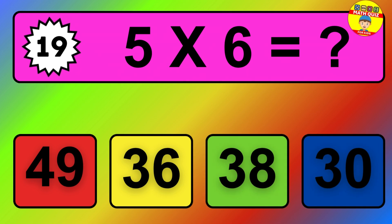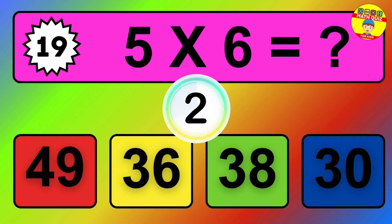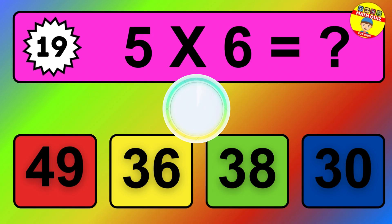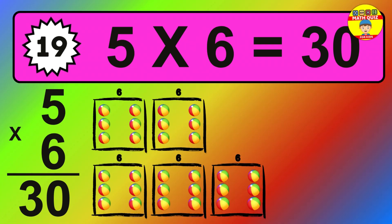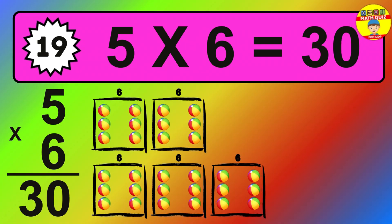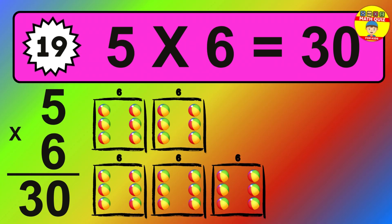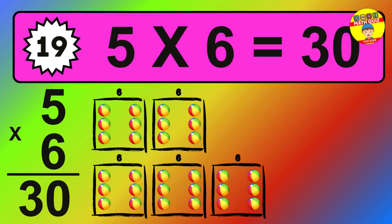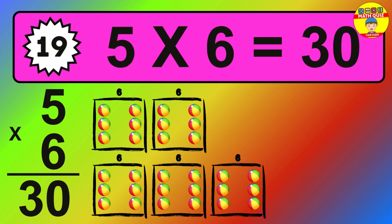Question nineteen: five times six equals what? The answer is: five times six is 30. To calculate, we have five groups with six balls each one. So how many balls do we have? 30 balls.